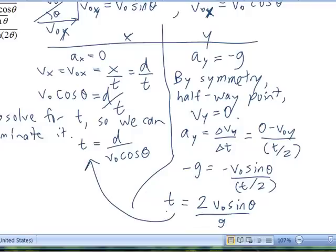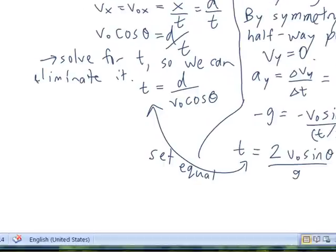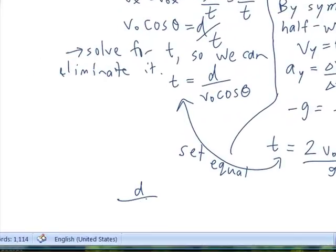So we're going to equate the x to the y. Set equal. Scrolling down a little bit, I have that d over V cos theta is equal to 2 V sub 0 sine of theta divided by g.